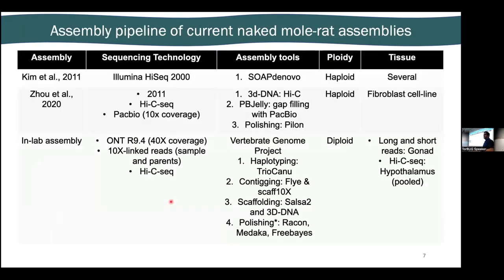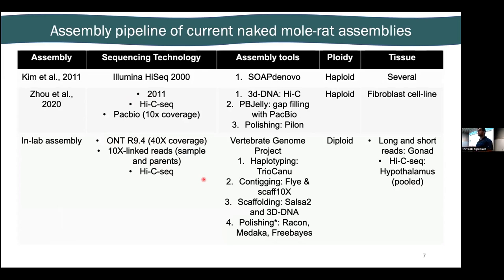For the assembly aficionados, a quick summary: there are three assemblies that exist for naked mole rat — a 2011 assembly, and then in 2020 Zou et al. did some Hi-C sequencing and low-pass PacBio sequencing to combine contigs, so it's still short read-based but with fused ends. We effectively followed the vertebrate genome project's pipeline, and also performed short read sequencing in the same animal to polish the assembly and improve individual base pair accuracy.